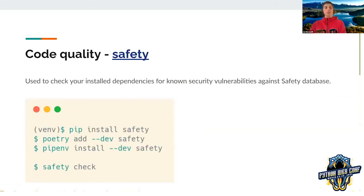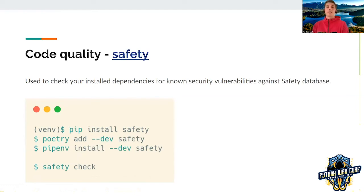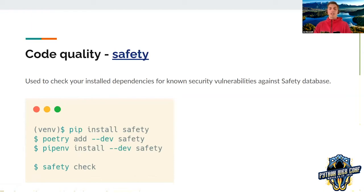Another tool for security is Safety. It's used to check your dependencies for known security vulnerabilities against the Safety database. It can be installed with pip, Poetry, or pipenv as a development dependency, and you can run it for your project by running `safety check` inside your project.